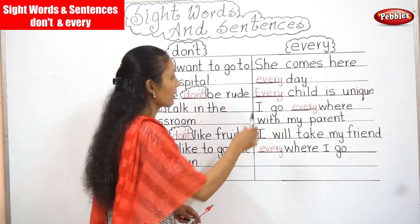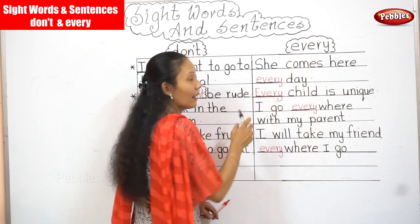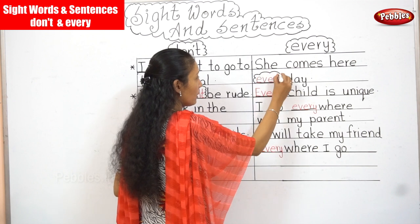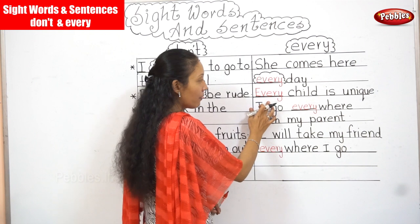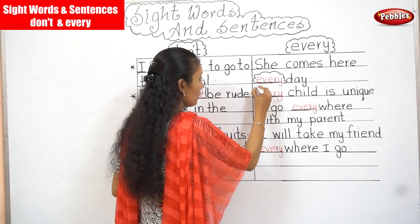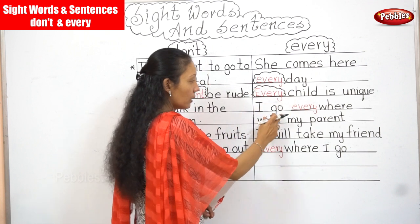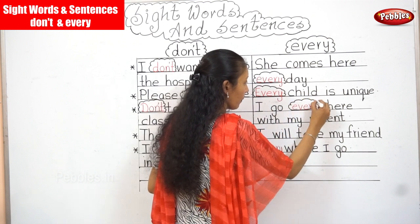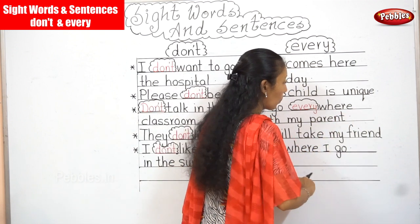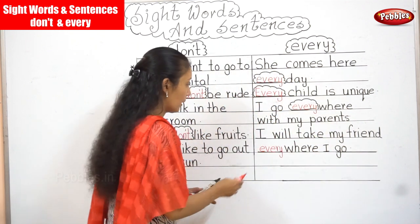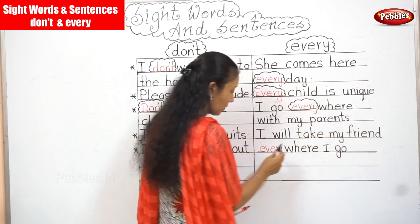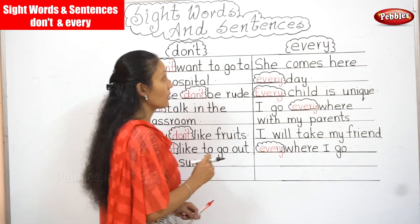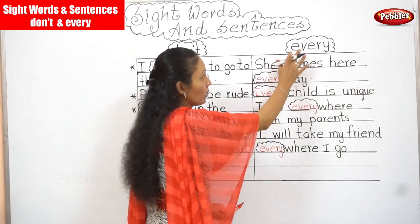Now read your sentences and I want you to see where you can see the word 'every' in each sentence. She comes here every day — your word 'every' is here. Every child is unique — 'every' is here. I go everywhere with my parents. I will take my friend everywhere I go. You have your word 'every' over here. So now you have learned some sentences with 'don't' and also with 'every'.